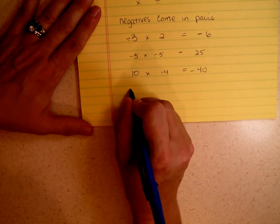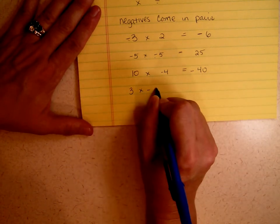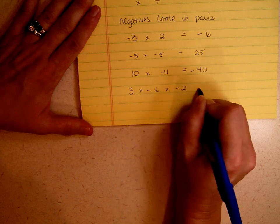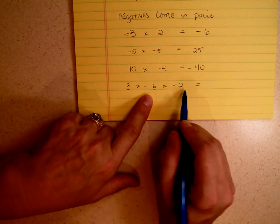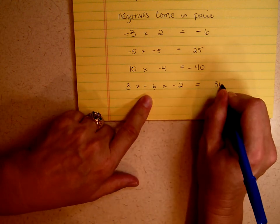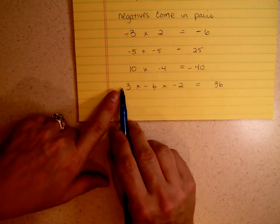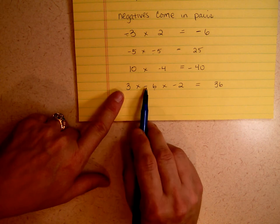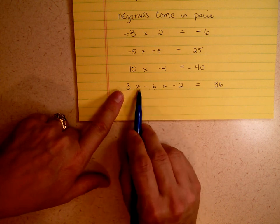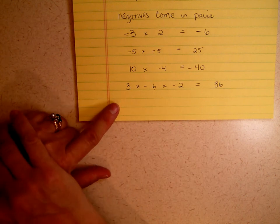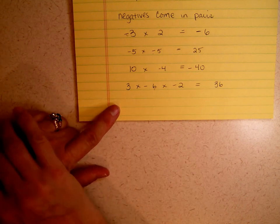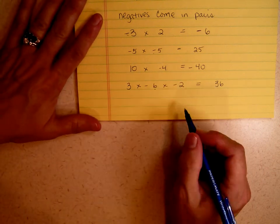What if I have 3 times negative 6 times negative 2? 3 times 6 is 18, and 18 times 2 is 36. So I know my number is 36. What's my sign? Positive, negative, negative — so how many negative signs do I have? 1, 2. Is my answer going to be positive or negative? It's got to be positive, because negatives come in pairs.